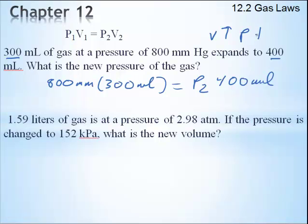Well, absolutely, we're going to expect the pressure to go down. So I'm going to multiply those two together, and I'm going to get something like 2.88 times 10 to the fifth, and the unit would be millimeters dot mL. And that equals P2 times 400.